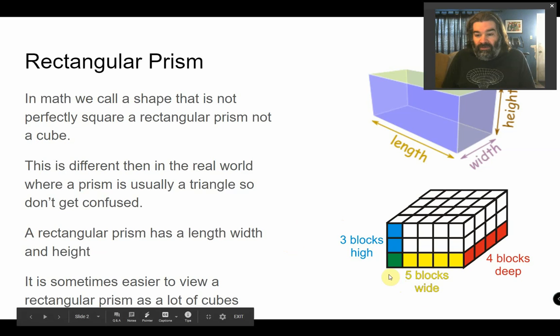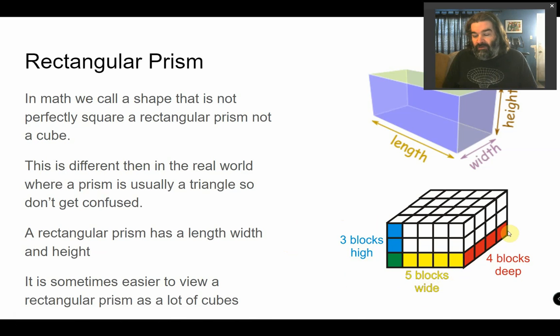A rectangular prism basically is an object that has a length and a width, but it also has a height. For example, one of the ways it's easier to view it is think of it as cubes. You can basically count across, count up.